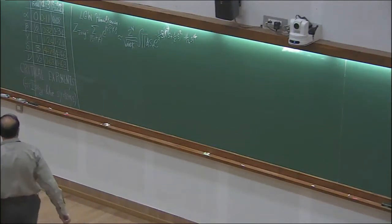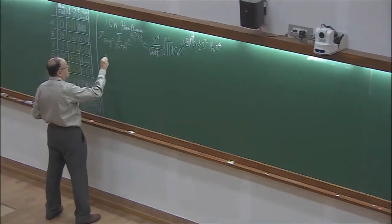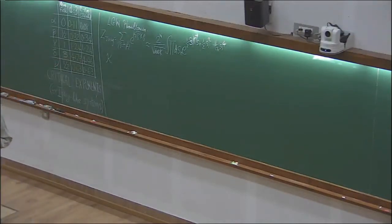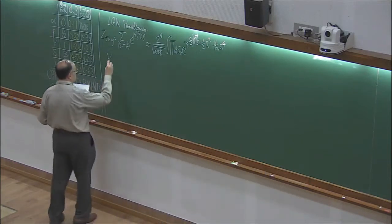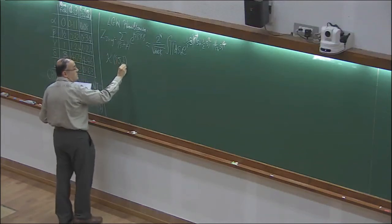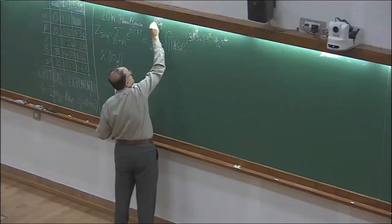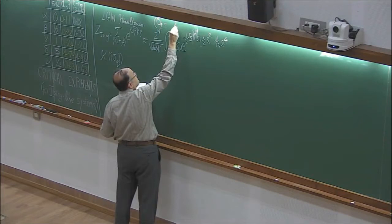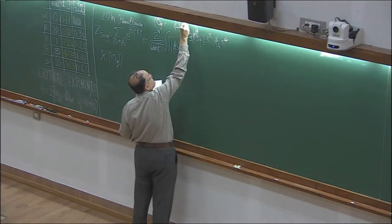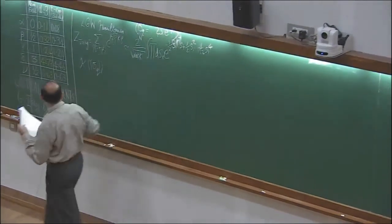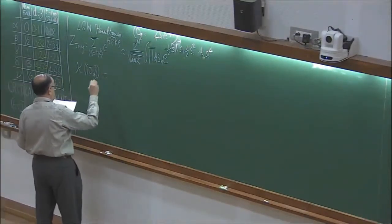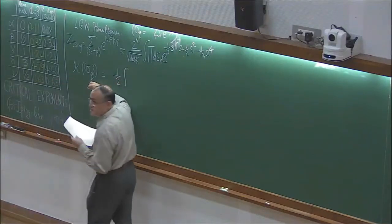We prefer to rewrite this Hamiltonian in momentum space. I'm using the notation and logic of the article by Wilson and Kogut, and I urge you all to read the relevant sections. The Hamiltonian script K as a function of sigma q's: we go from variables s_i to sigma_q, where sigma_q is defined as the sum of s_i e to the minus i q dot r_i. That is a Fourier variable.